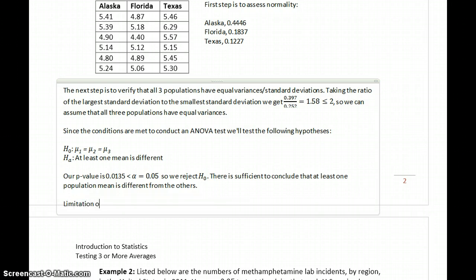We could call this a limitation or problem with the test. In this case, the results of the ANOVA don't tell us which area has higher or lower. We don't know which one.